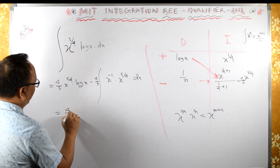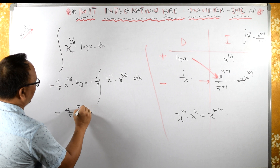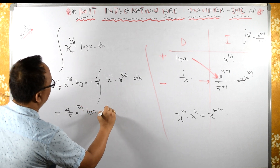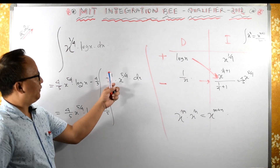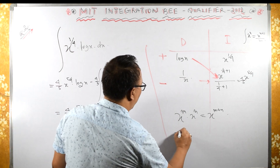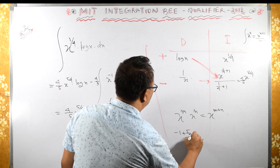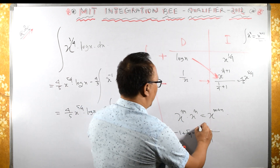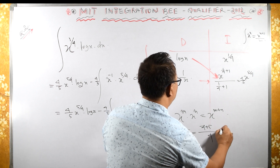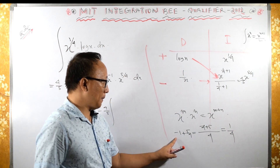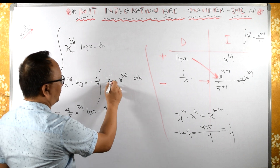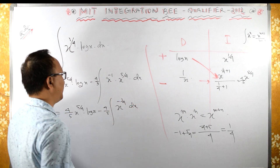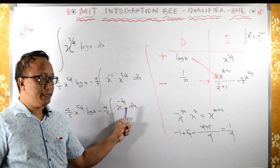This becomes 4/5 x raised to 5/4 log x minus 4/5 integral of x raised to minus 1 plus 5/4. Taking the LCM of 4, we get minus 4 plus 5 over 4, which is 1/4. So instead of that we can write x raised to 1/4 dx.